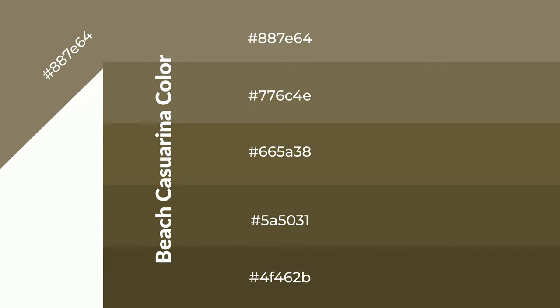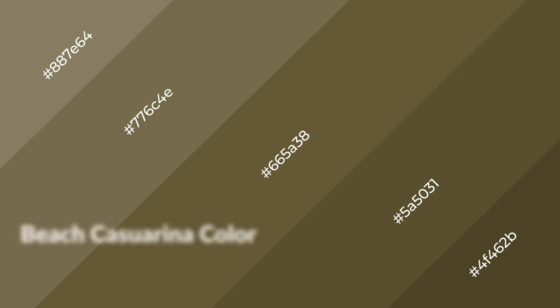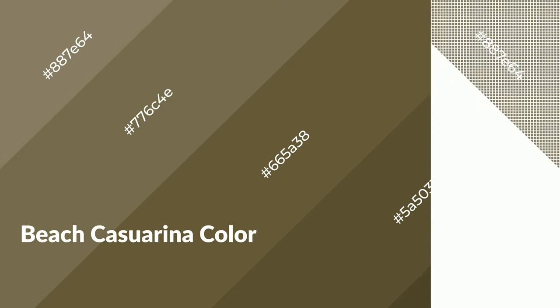To generate shades of a color, we add black to the color, and it is used in patterns. 3D effects, layers and shades create depth and drama. Beach Casuarina is a warm color, and it emits cozier and active emotion.